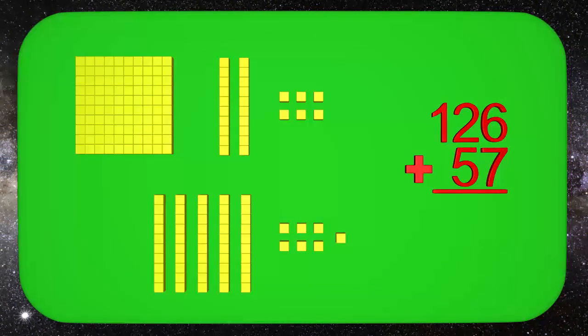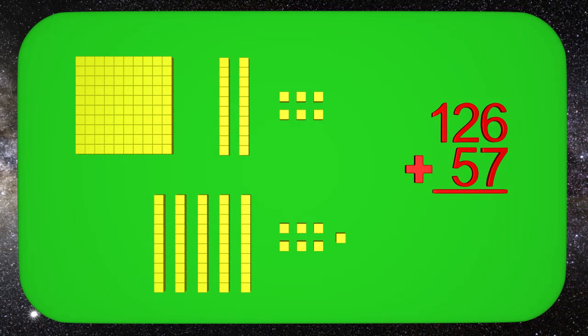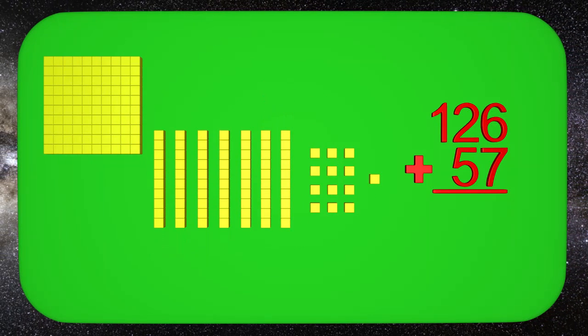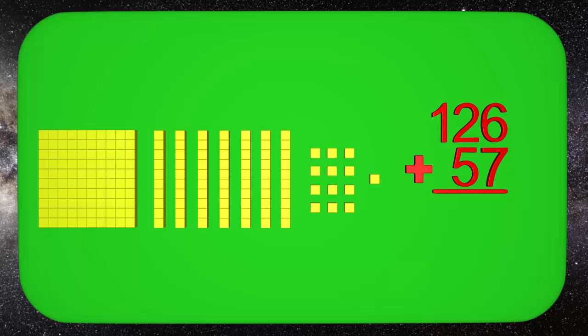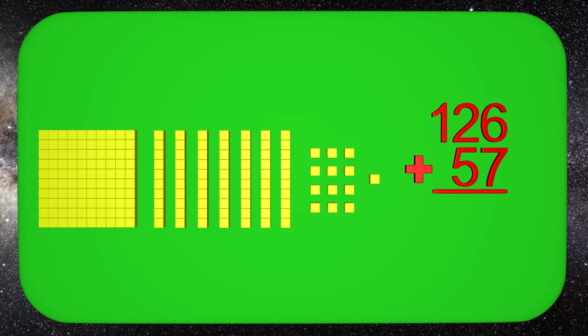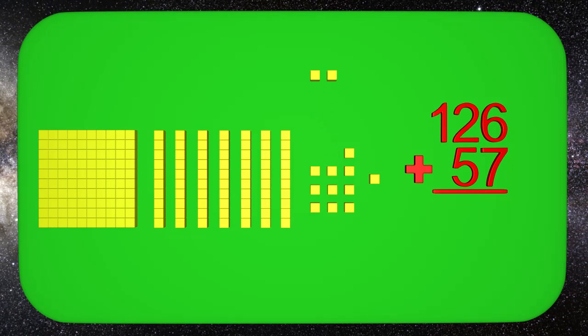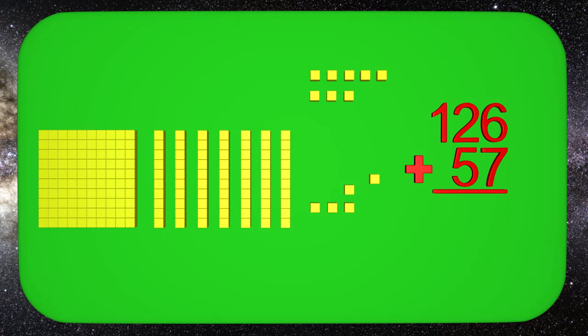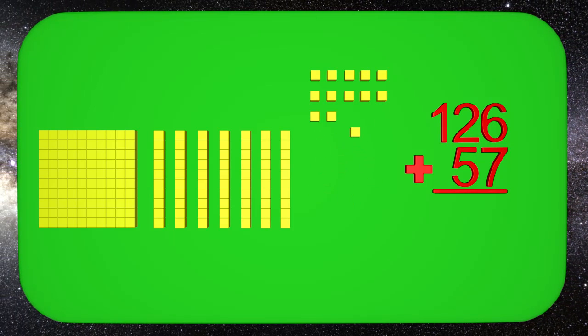To do this we start with the ones blocks. We combine all of the ones blocks, the tens blocks, and the hundreds blocks together. Now we add them starting with the ones. We have 1, 2, 3, 4, 5, 6, 7, 8, 9, 10, 11, 12, 13.